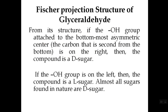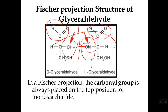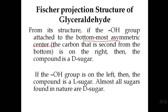In the Fischer projection structure of sugars, if the OH group is attached to the bottom-most asymmetric carbon — the second carbon from the bottom — and it is towards the right side, then it is called a D-sugar. If the OH group on the bottom-most chiral carbon is on the left side, then the compound is an L-sugar.